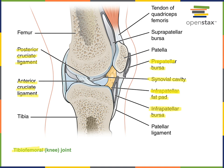Another accessory structure in the tibiofemoral joint is the meniscus — a pad of fibrocartilage that provides cushioning and improves the fit to help stabilize the articulation. The medial and lateral menisci are C-shaped pads of fibrocartilage that improve the fit of the tibial surface, helping to stabilize the rounded femoral condyles as they articulate with the relatively flat condyles of the tibia.